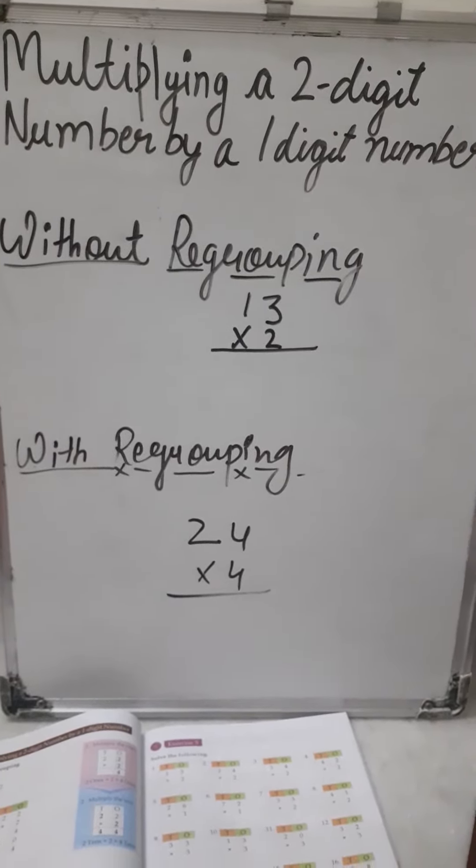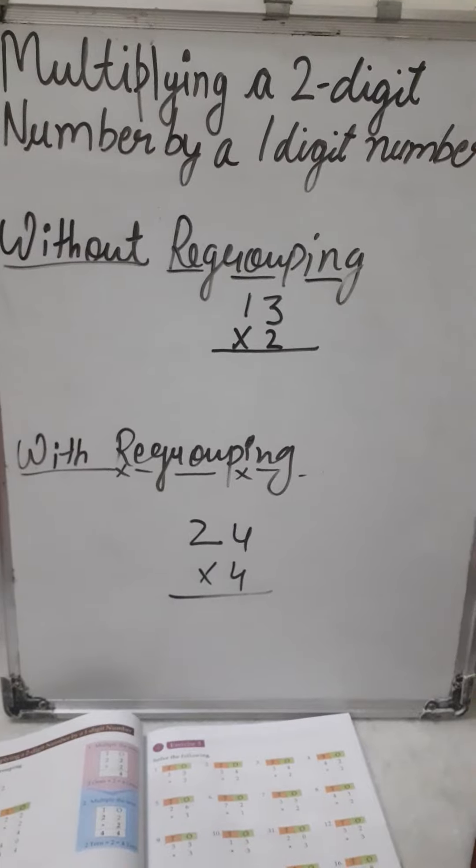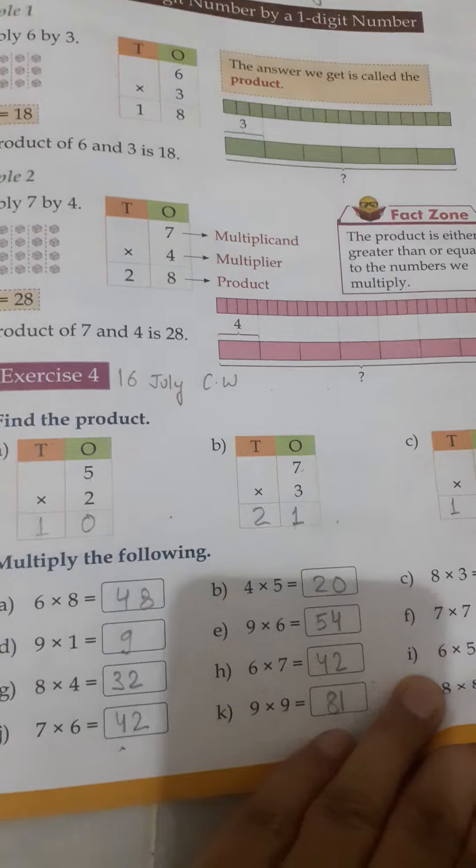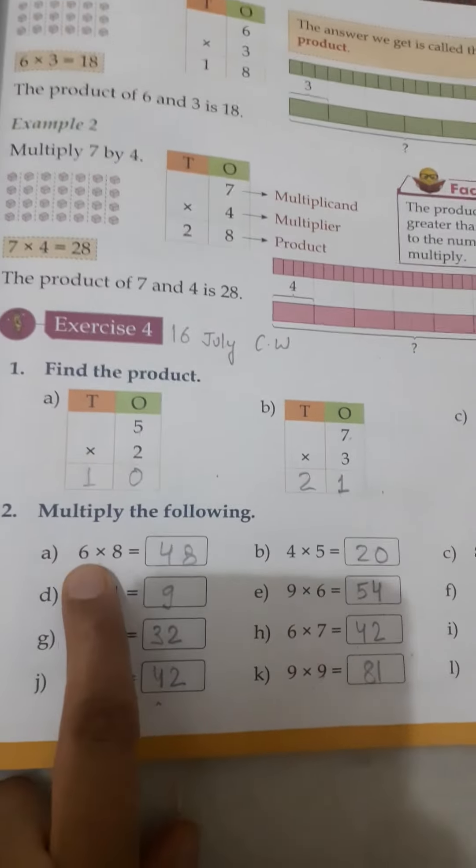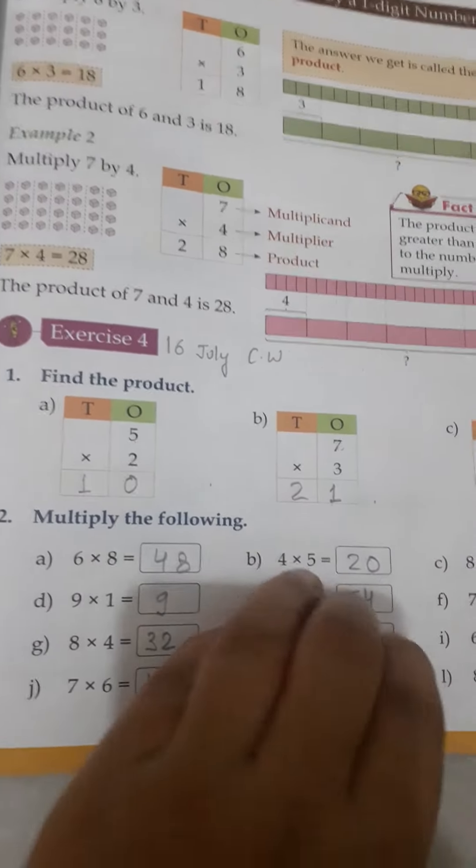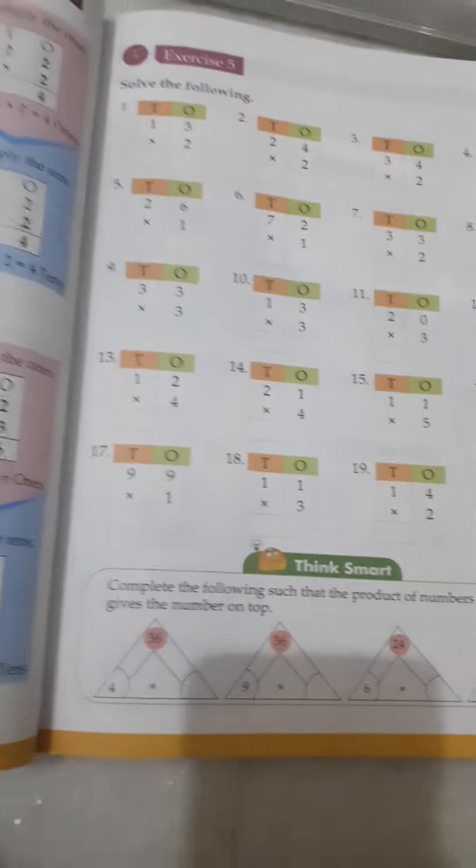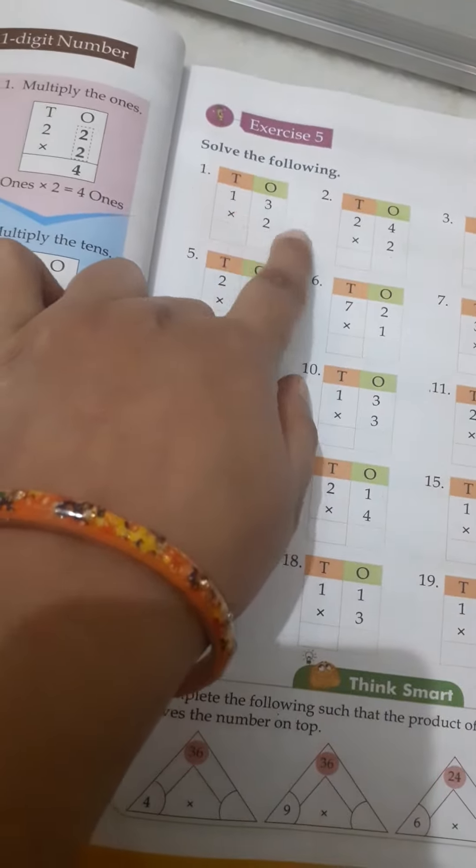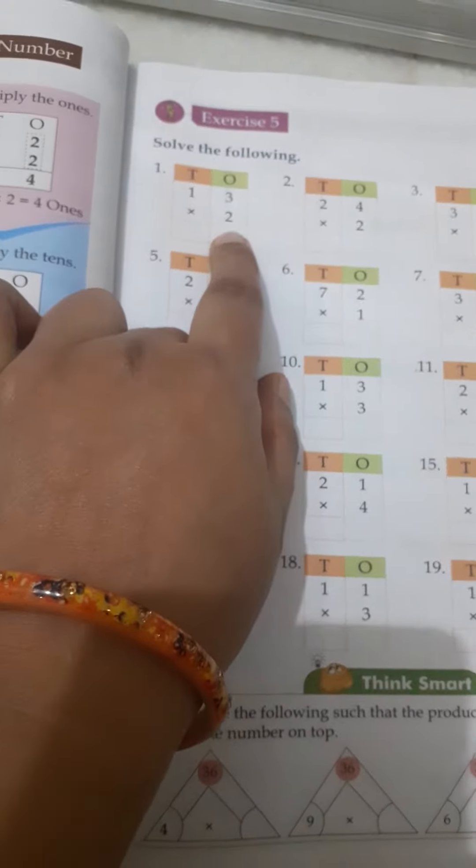As earlier we have done multiplying a one-digit number by a one-digit number. In the next exercise we are having the questions regarding a two-digit number multiplying by a one-digit number.